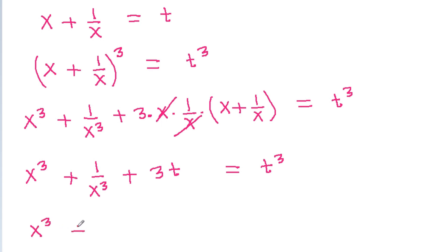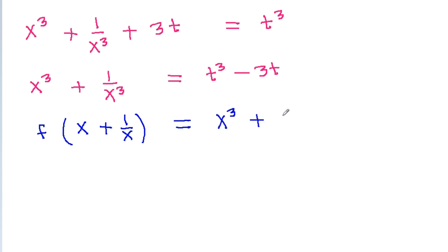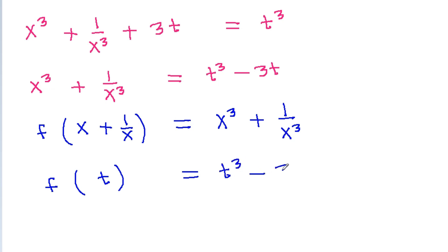So x³ + 1/x³ will be equal to t³ - 3t. Since we have given that f(x + 1/x) = x³ + 1/x³, we can write f(t) = t³ - 3t.